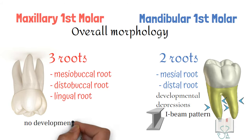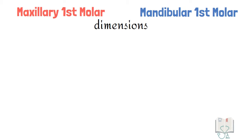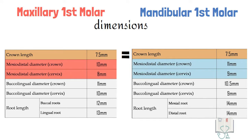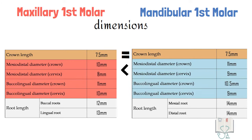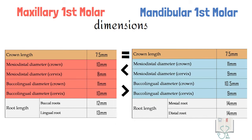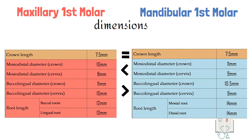There are no developmental depressions on maxillary first molar roots. Coming to their dimensions, in both first molars crown length is equal. The mesiodistal dimension is more in mandibular first molar whereas the buccolingual dimension is more in maxillary first molar, and the roots are longer in mandibular first molar.